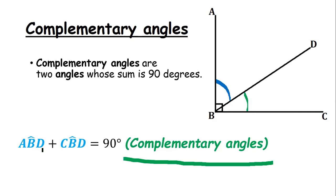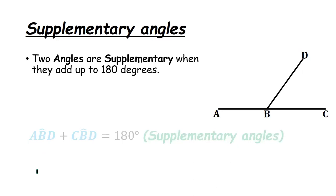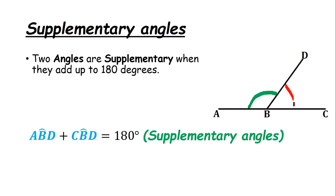Supplementary angles: two angles are supplementary when they add up to 180 degrees. Note that interior angles of a triangle are supplementary because they add up to 180 degrees. Two angles on a straight line — we can even increase the number of angles as long as they add up to 180 degrees we say they are supplementary. Angle ABD and angle CBD are supplementary because they add up to 180 degrees.